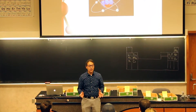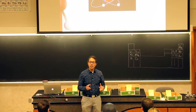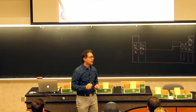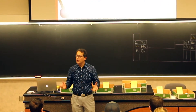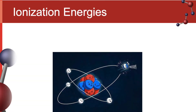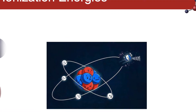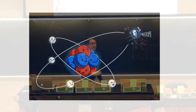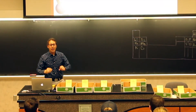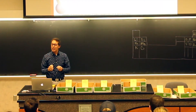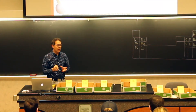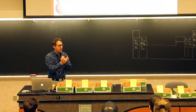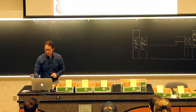Ionization energy is just a fancy term that means how much energy does it take to remove an electron from an atom? It could be one electron, it could be multiple electrons. There is some amount of energy it takes to remove these electrons from atoms, because the nucleus is positively charged and it wants to hold those electrons in place. So it's going to take some energy to remove them.